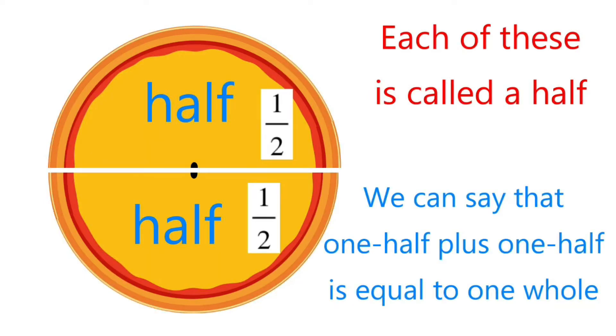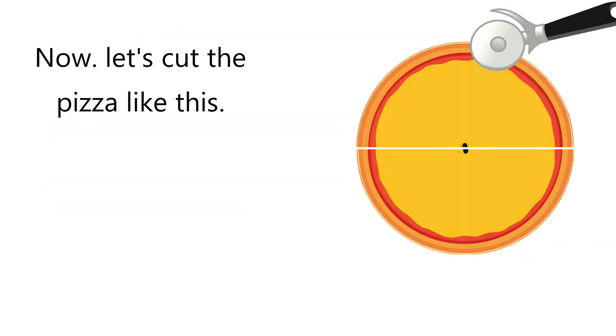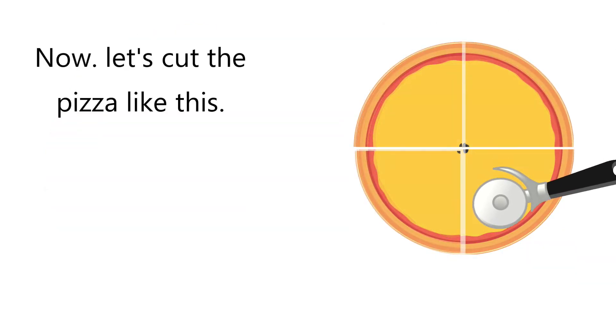Also notice that one half plus one half equals one whole pizza. So one half plus one half equals 2 over 2, or 1. Now let's take that awesome pizza and slice it like this.